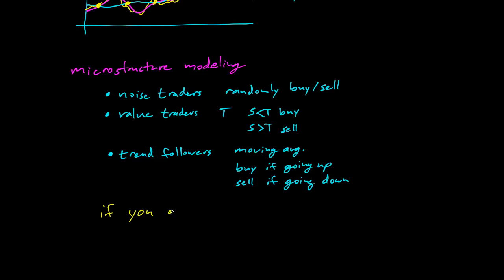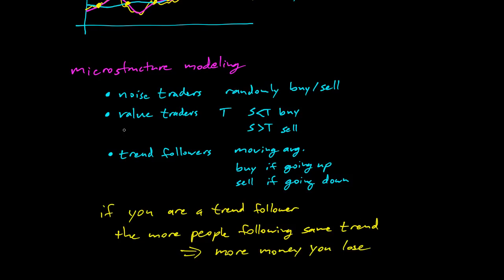And you can come up with conclusions like if you're a trend follower, the more people that follow the same trend, the more money you lose. This is a conclusion you come to by doing the simulation and seeing that you can simulate all the details and you can see that if there are a lot of people following the same trend, they're all losing a lot of money because they're pushing the stock up and then it's going down and then they're selling and they're doing the opposite of the value traders, basically. This is cool stuff.